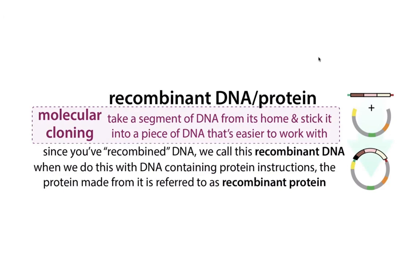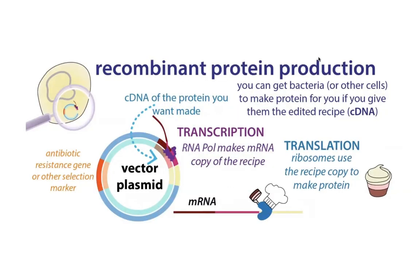When I say recombinant, that just means we're taking DNA from one place and sticking it somewhere else. We're taking DNA that contains the instructions for making a protein that we're interested in, and we're putting it in a circular piece of DNA called a vector plasmid. A plasmid is a circular piece of DNA, and the vector means it's like a vehicle for getting it into cells.